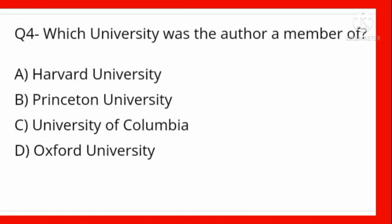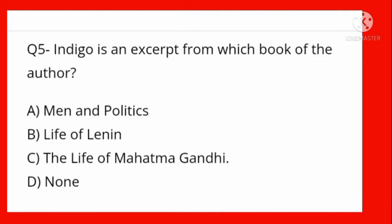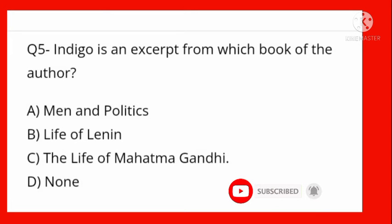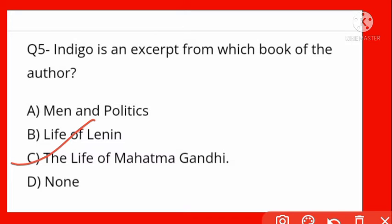Next: Indigo is an extract from which book of the author? Options: Man and Politics, Life of Lenin, The Life of Mahatma Gandhi, none. Option C is correct — The Life of Mahatma Gandhi. Isme Mahatma Gandhi ke Champaran Aandolan Bihar mein 1917 mein start kiya uska varnan hai.